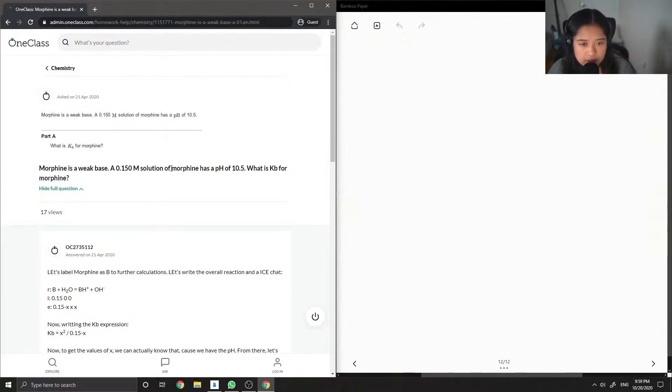A 0.15 molar solution of morphine has a pH of 10.5. What is Kb for morphine?